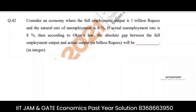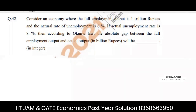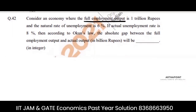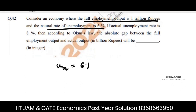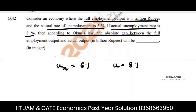This is question number 42 of IIT Jam Economics 2021 paper. Consider an economy where full employment output is 1 trillion rupees and the natural rate of unemployment is 6%. The actual unemployment rate is given as 8%. According to Okun's law, we have to find the absolute gap between full employment output and actual output.